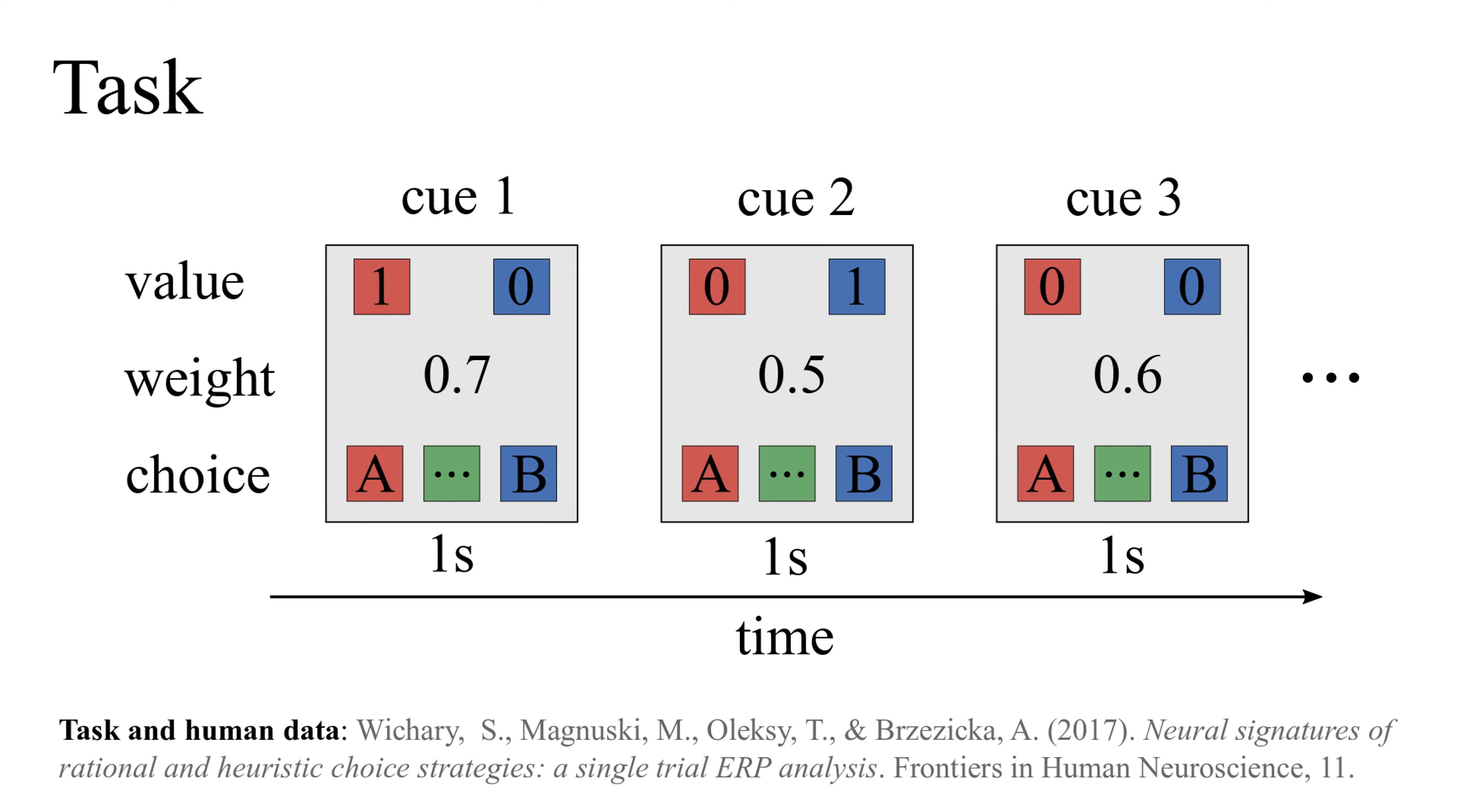We focus on probabilistic multi-attribute decision-making, in which an individual must assess the utility of potential actions by gathering information from multiple sources over time. In our task, a participant is asked to choose between two options, A and B, and information is delivered sequentially via cues, each of which has a particular weight.